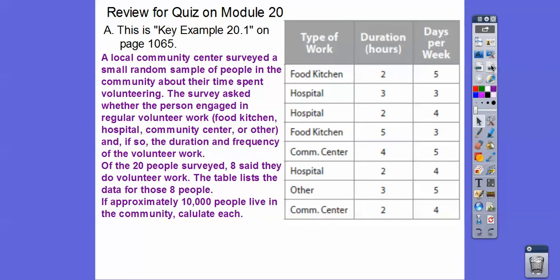So here we have a local community center that surveys a small random sample of people in the community about their time spent volunteering. The survey asks whether the person engaged in regular volunteer work, whether it was food kitchen, hospital, community center, or other, and if so, the duration and frequency of the volunteer work. So here's the duration, here's how many people said they volunteer, this is how many hours they do, and how many days a week they do. If approximately 10,000 people live in the community, calculate each.